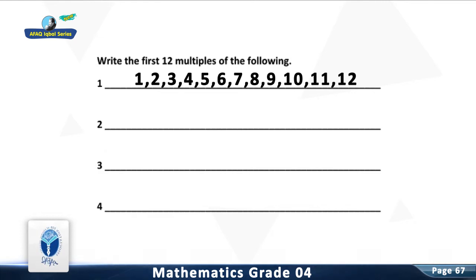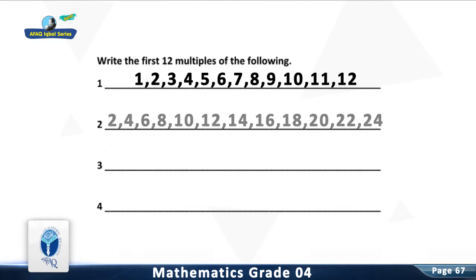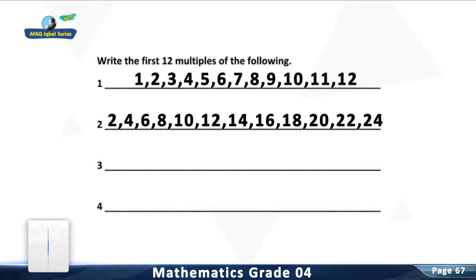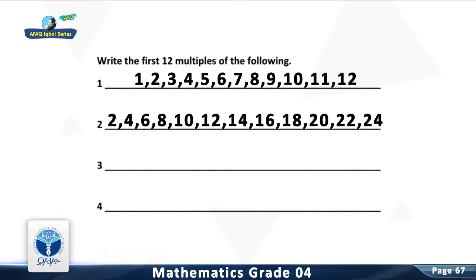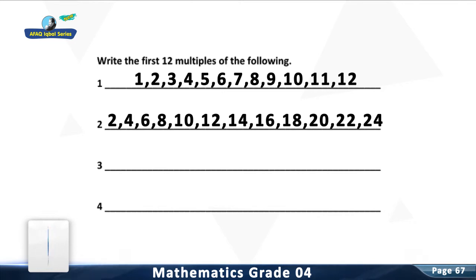Question 2: Write the first 12 multiples of 2. The first 12 multiples of 2 are 2, 4, 6, 8, 10, 12, 14, 16, 18, 20, 22, and 24.